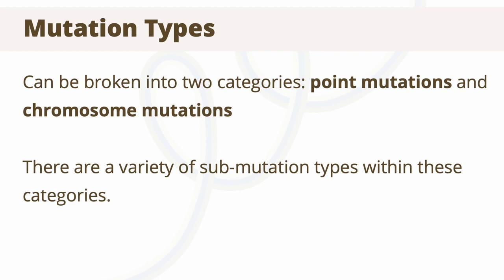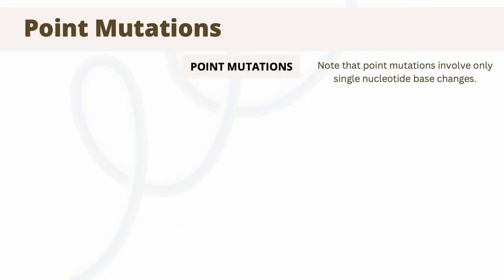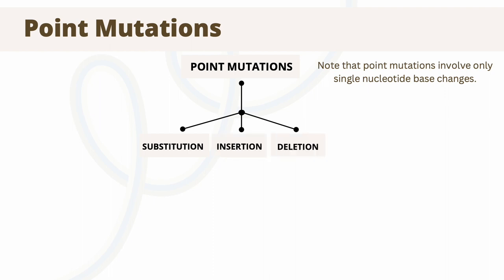When investigating the types of mutations that can occur, DNA replication errors can be split into two main categories: point mutations and chromosome mutations. These categories can be separated further into submutation types. Point mutations involve only single nucleotide changes within the sequence and can be divided into substitution, insertion, or deletion mutations.